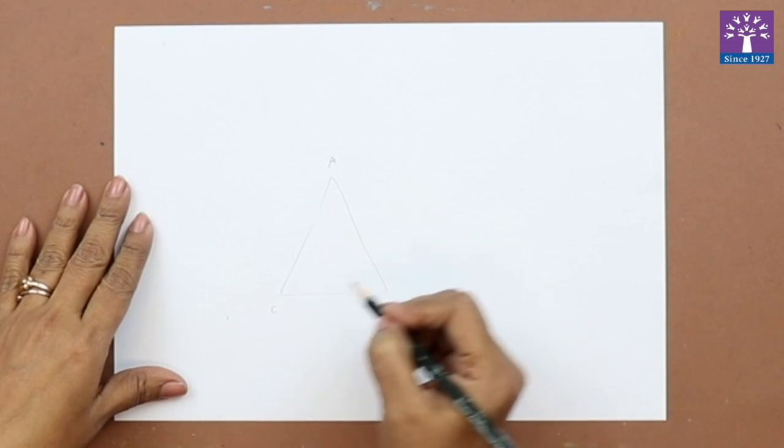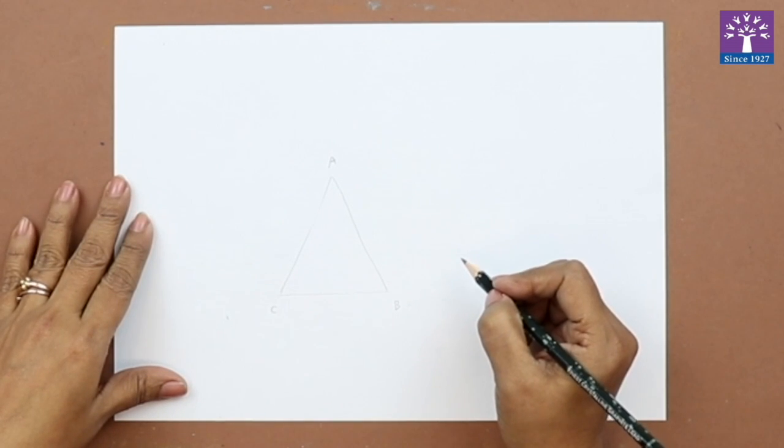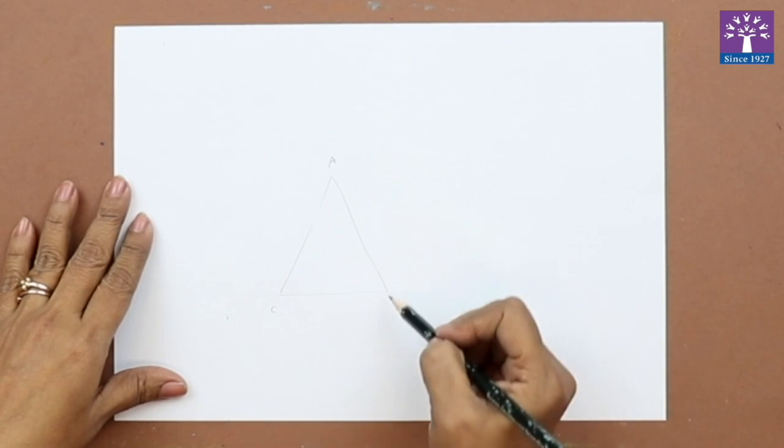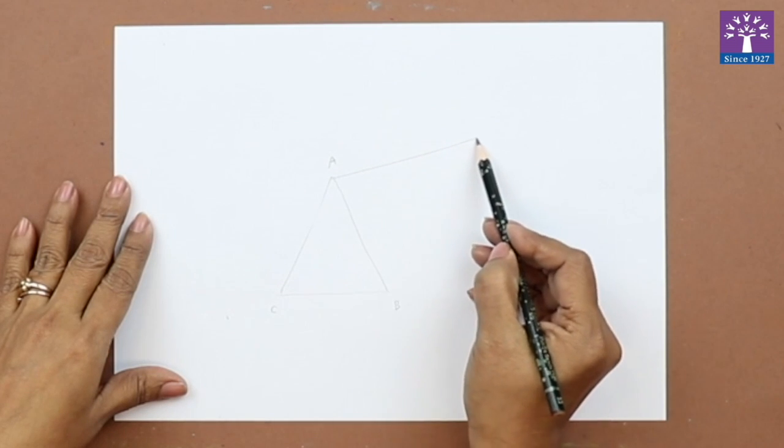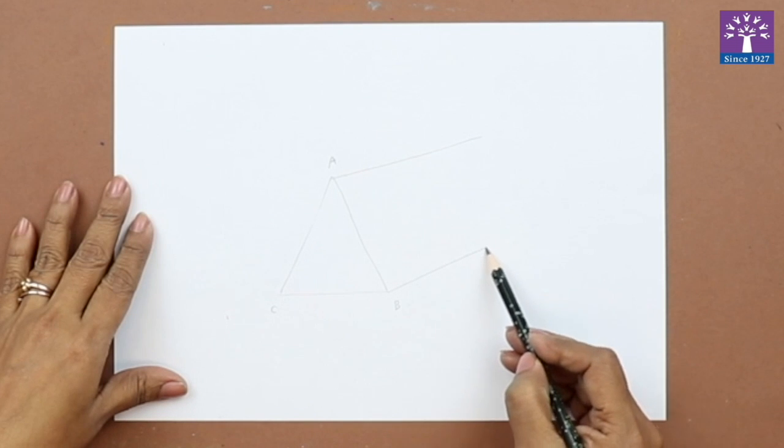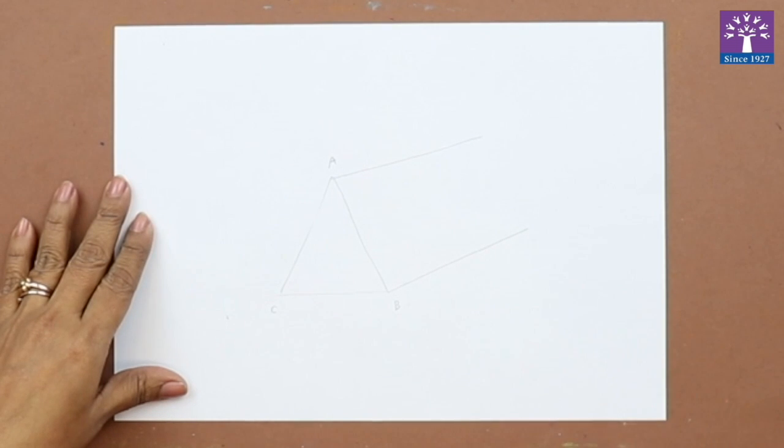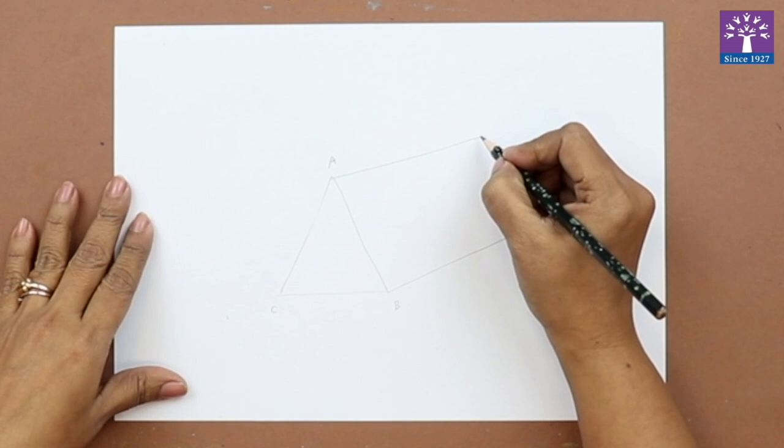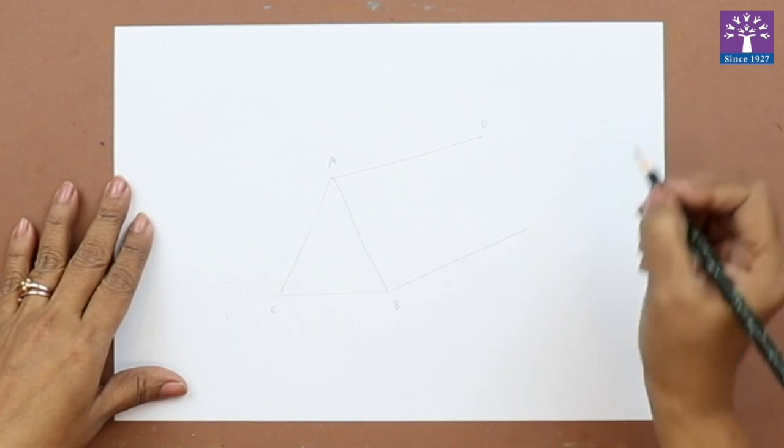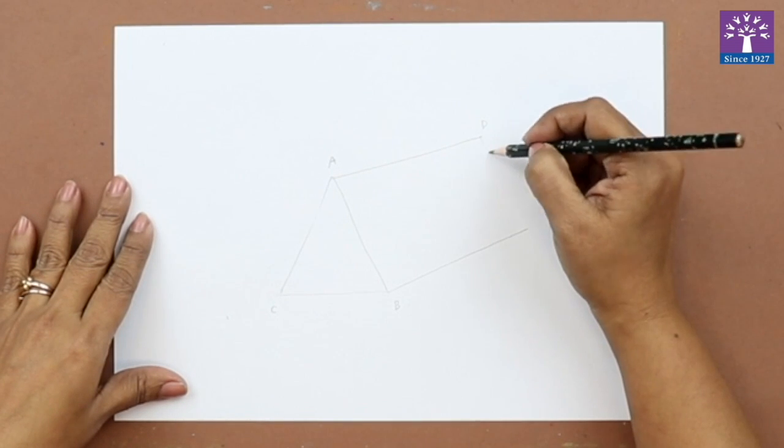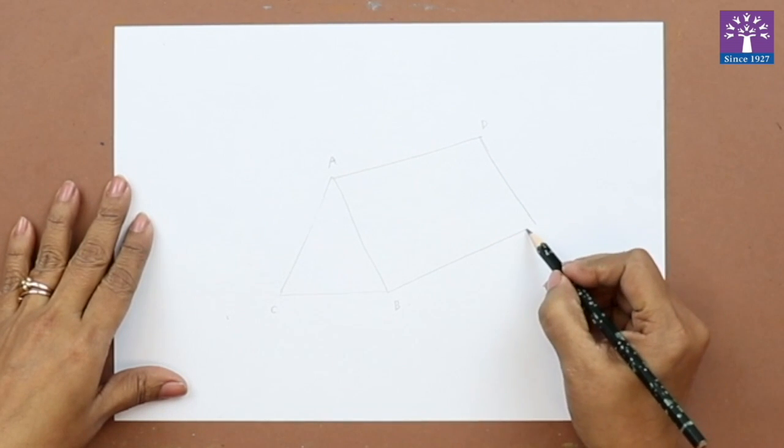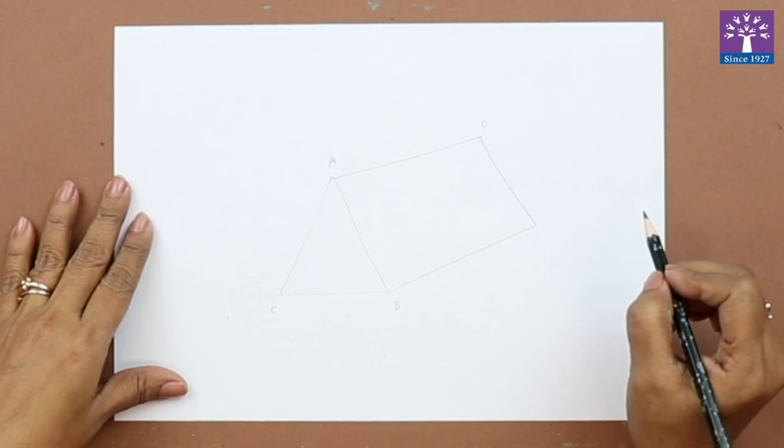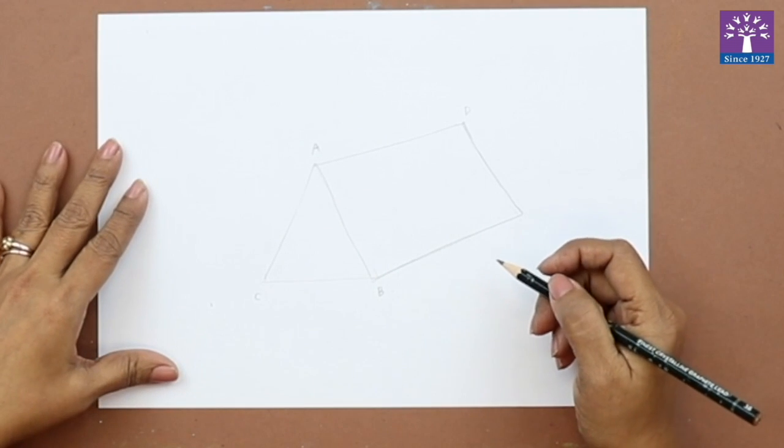Now draw two slant lines from point A and from point B. Mark this point as D. Now draw a slant line from D and connect this line. Draw a straight line from point A going downwards.